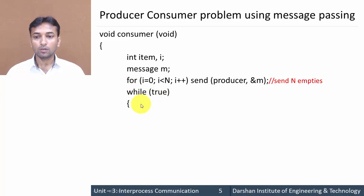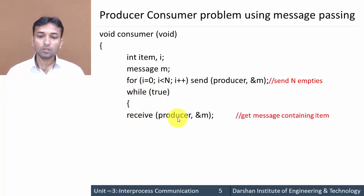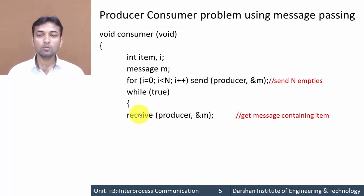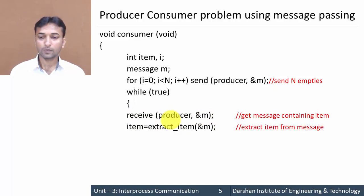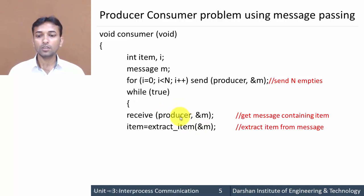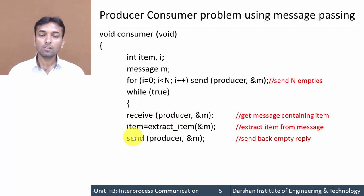Inside while(true): 'receive(producer, &m)' — the consumer receives a message containing data from the producer. Then 'item = extract_item(&m)' — whatever data is received from the producer is extracted into the item variable.